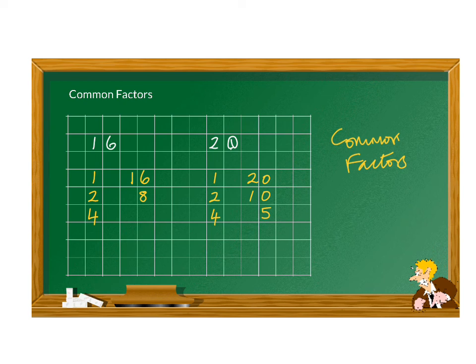The factors of 20: we have one and 20 itself of course. We also have two and we have ten. We don't have three. Three does not go into 20, we cannot include it. We do have four because four fives are 20. Six, no it does not go into 20. Eight doesn't go into 20. So I think we have all the factors of 20 here.